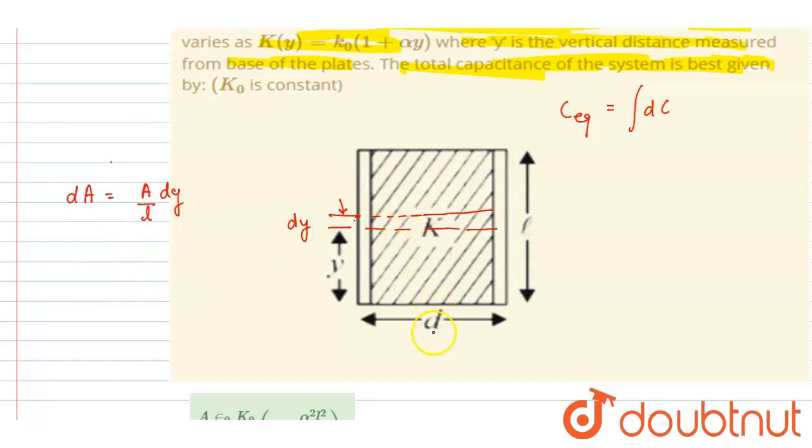area. Separation between them is d, and the dielectric constant at this position will be K(y). So we can write down the dC now. The capacitance of the small element will be equal to K times dA times ε₀ by the separation between the plates.